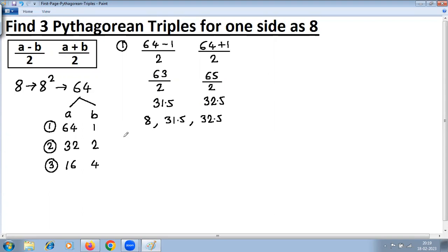Let's calculate second triple by using second set of values, second set of factors. a is 32, b is 2. Substitute in the same formula: 32 minus 2 upon 2, 32 plus 2 upon 2.